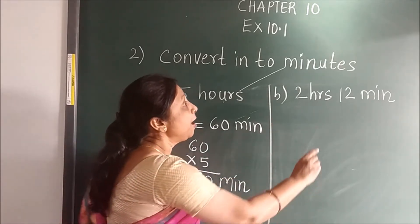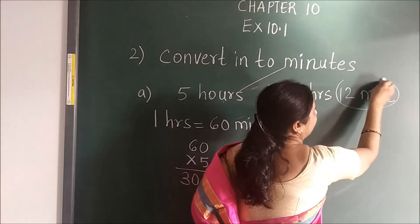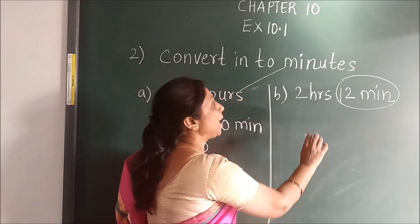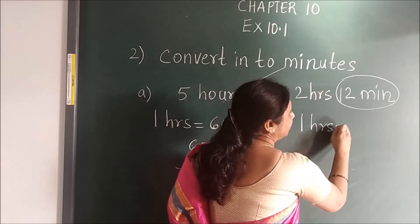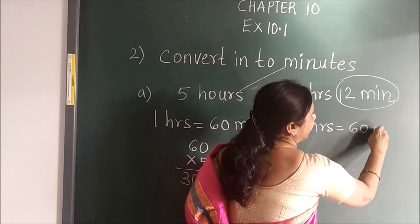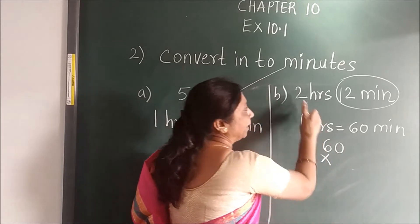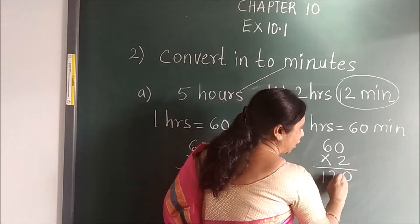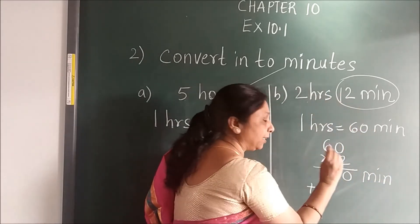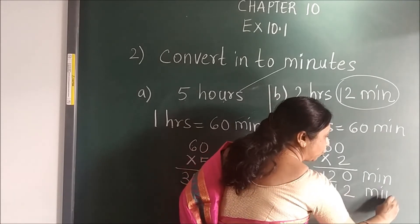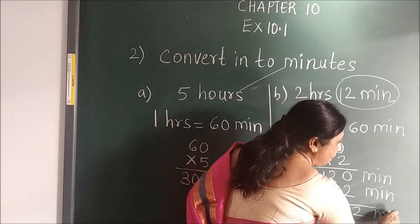Same here, we will proceed. You have to convert into minutes, but this part is already in minutes, so you will not touch it. For the hours part, 1 hour is equal to 60 minutes. 60 multiplied by 2 gives 120 minutes. Then the minutes already given — which is circled — you are going to add. When you add, you will get the answer: 132 minutes.